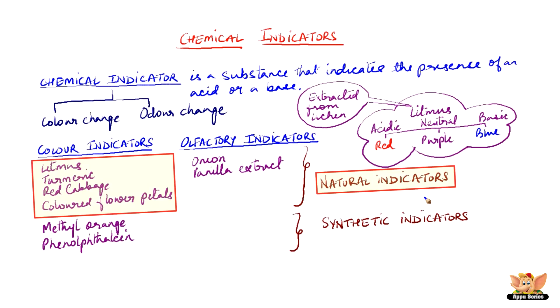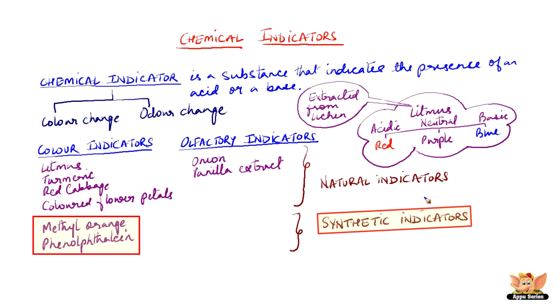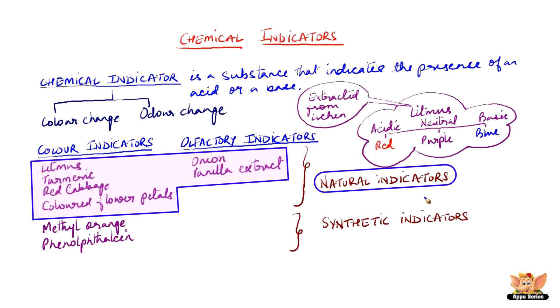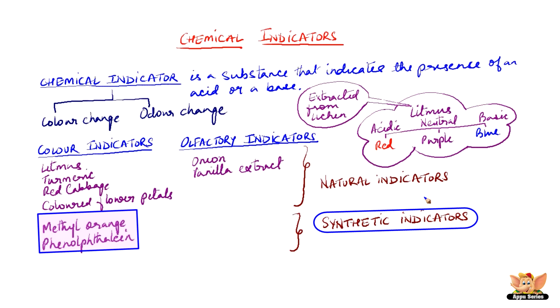Those indicators that have plant origin are natural indicators and the indicators that are chemical are called synthetic indicators. Here, litmus, turmeric, red cabbage, colored flower petals, onion and vanilla extract are derived from plants, so they are natural indicators. Methyl orange and phenolphthalein are chemicals, so they are synthetic indicators.